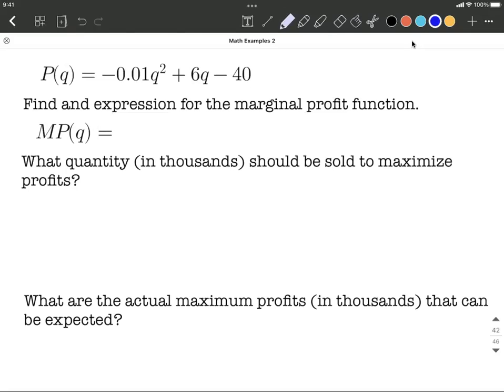Okay, we're given a profit function. P is profit, Q is quantity, both are in thousands. First goal, we want to find the marginal profit function. So marginal profit just means the same thing as the derivative of the profit function.